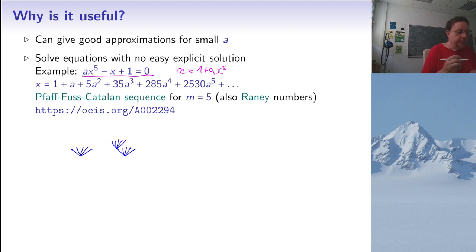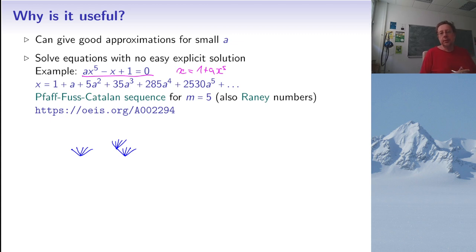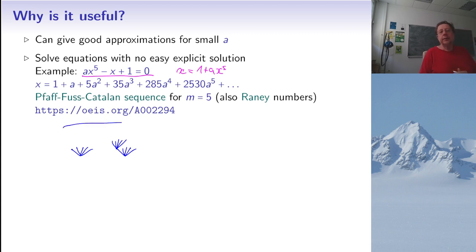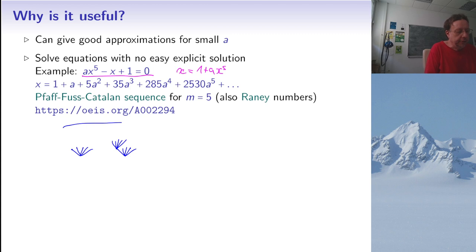A second point is that this applies to many different equations. For a degree-five equation ax-to-the-fifth minus x plus one equals zero, there is no general theory like for degree two. But I can still write x equals one plus a times x-to-the-fifth and substitute iteratively. The coefficients of powers of a now count trees of degree five rather than binary trees, leading to what's known as the Fuss-Catalan sequence.